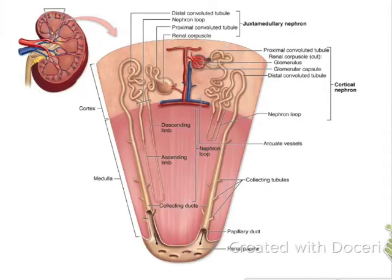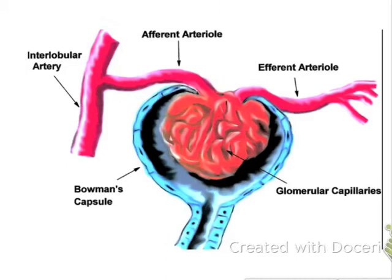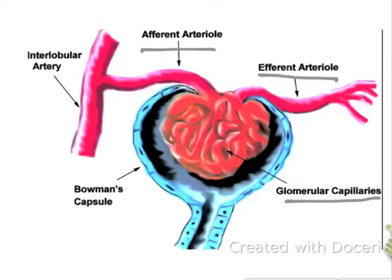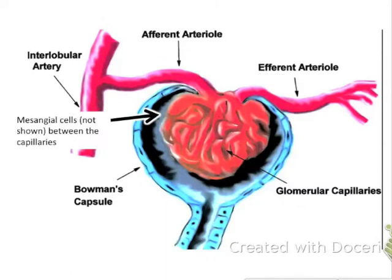So let's take a closer look at the glomerulus. It's made up of a few different parts. We have an afferent arteriole that sends the blood into these glomerular capillaries. And then once they're filtered at the glomerular capillary level, they exit the area through the efferent arteriole. One thing that's not pictured here is the mesangial cells, which support the capillaries and are hidden in between each of these glomerular capillaries.